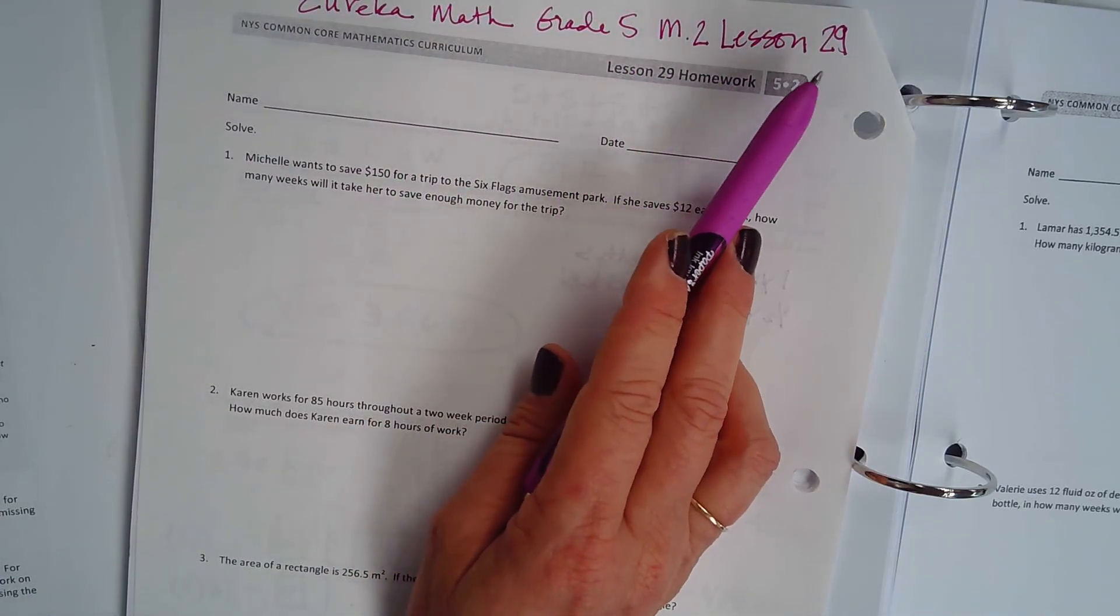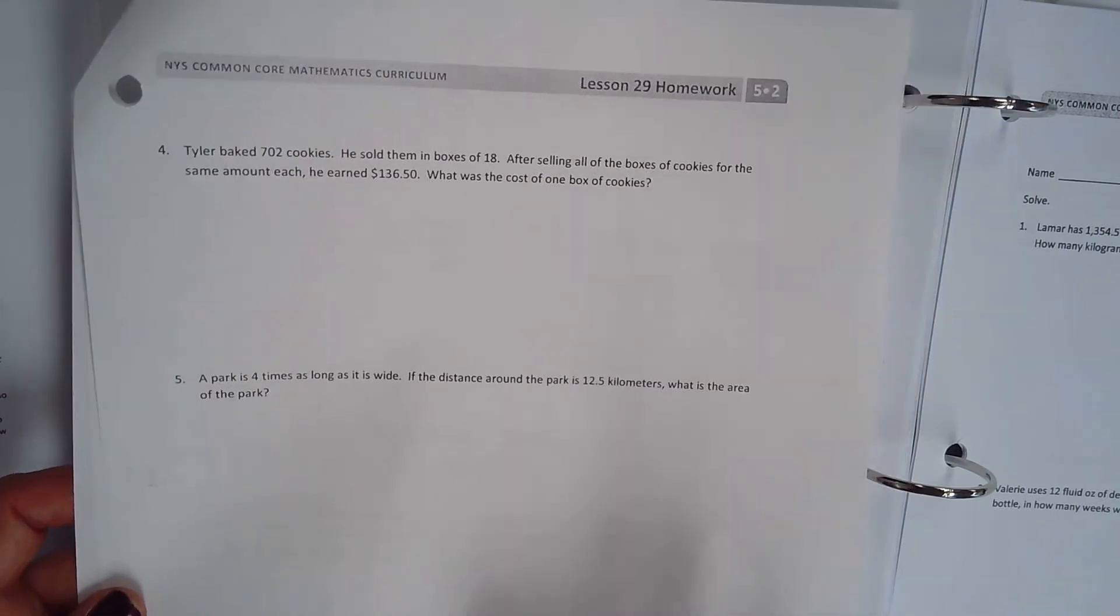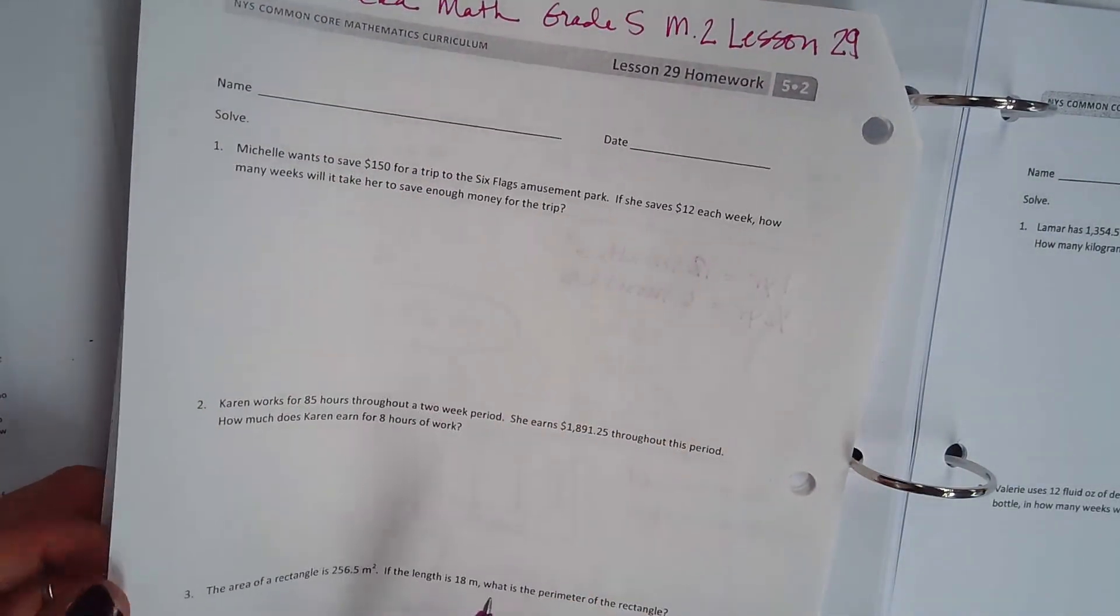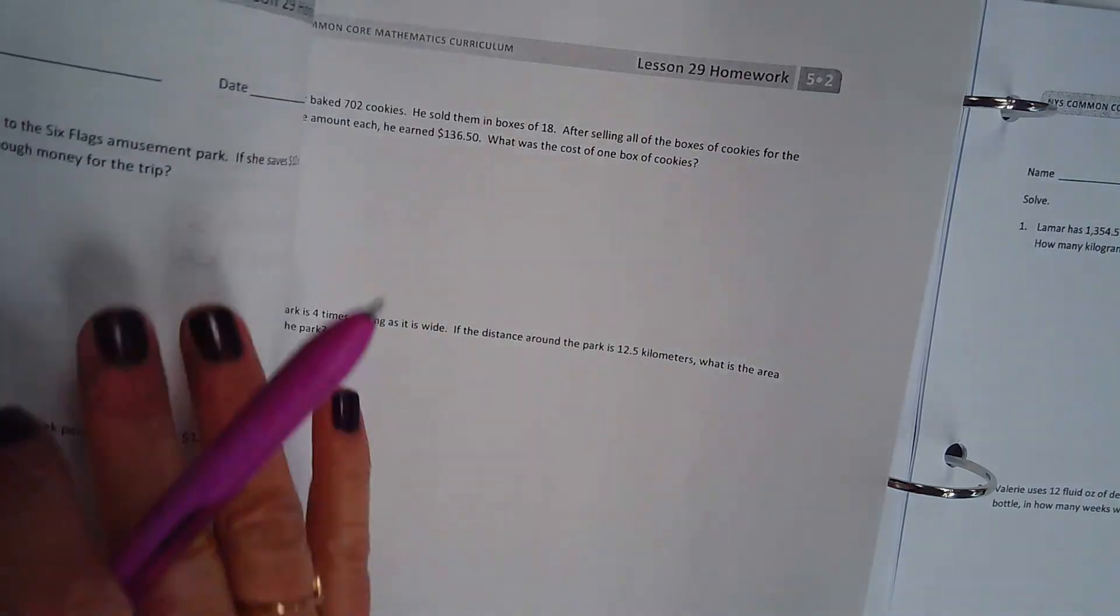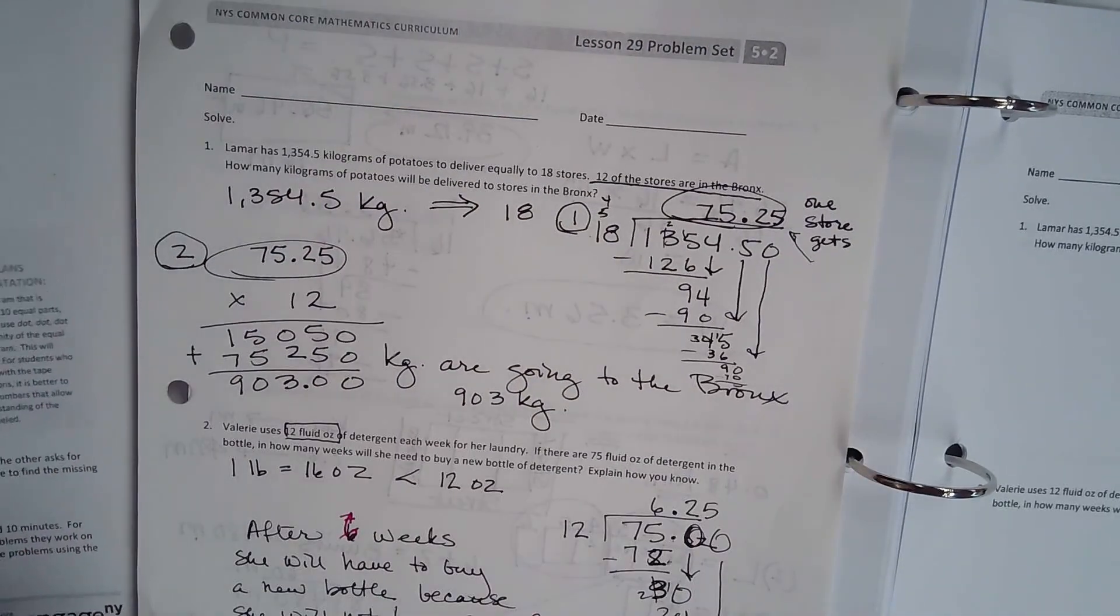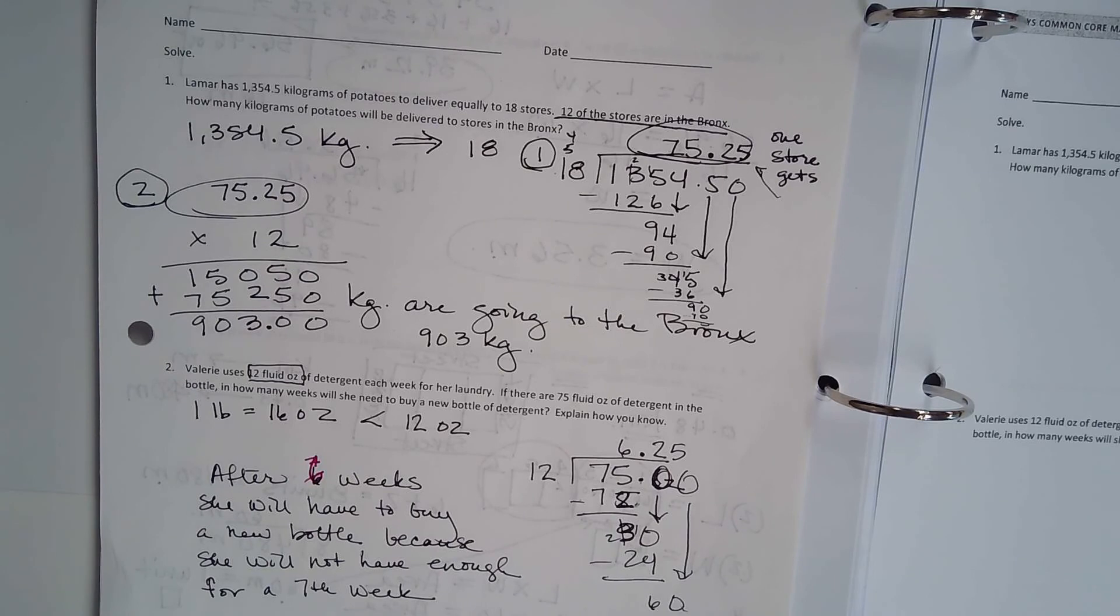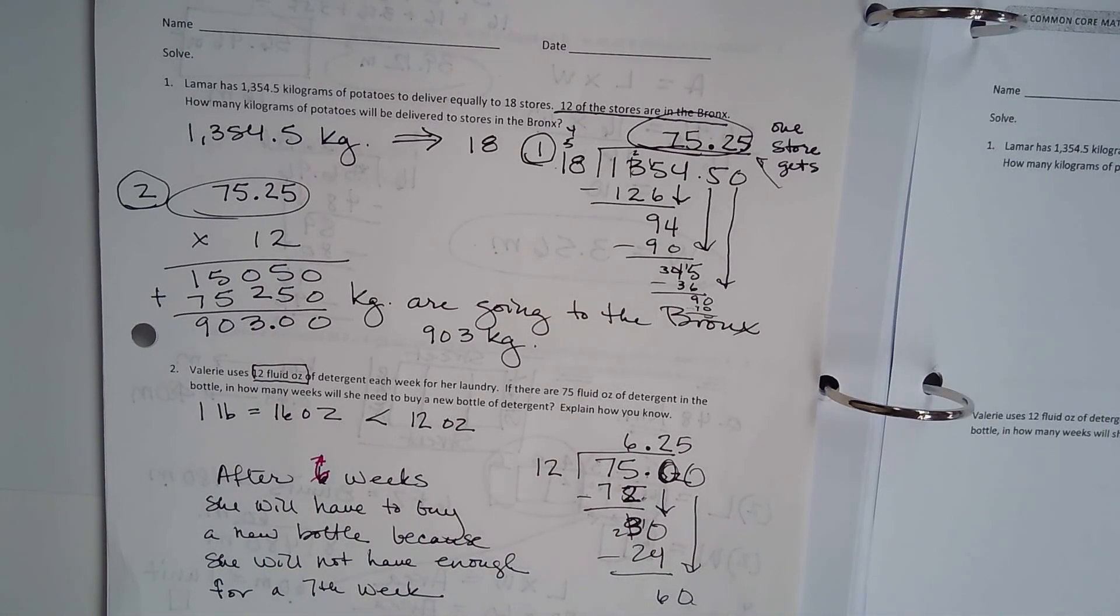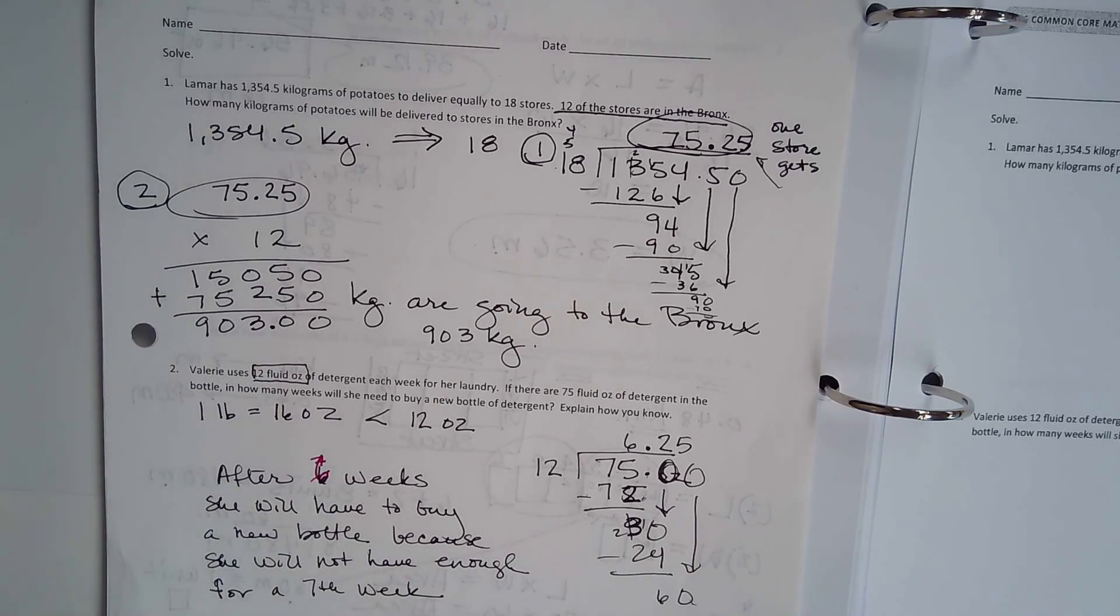Eureka Math, Grade 5, Module 2, lesson 29. Mr. Eureka Math will go through each of these five problems with you if you need additional help. But remember, these problems are going to go along with your problem set. So look at the structure. Look what they're asking. How did we solve it over here? Your additional resource is to go to Eureka Math, and he will go through the homework with you. Always try the homework first. See what you are able to do. How far can you get before you need that help? Good luck.